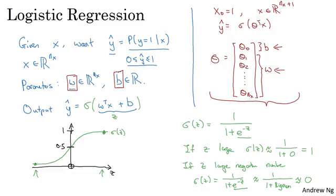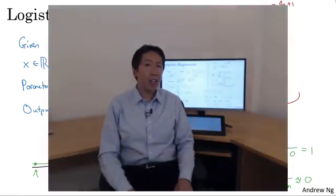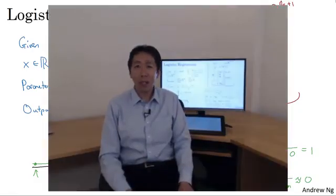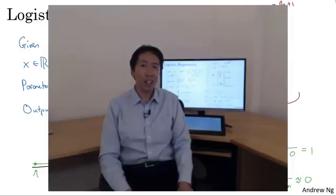But if you've not seen this before, it's not important and you don't need to worry about it. So you've now seen what the logistic regression model looks like. Next, to train the parameters w and b, you need to define a cost function. Let's do that in the next video.